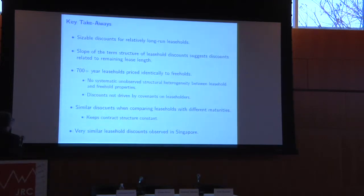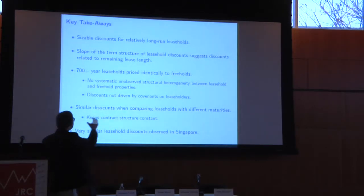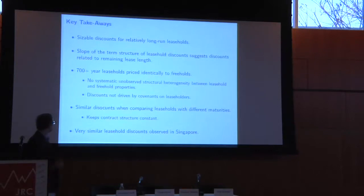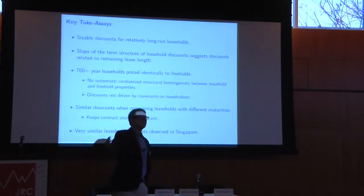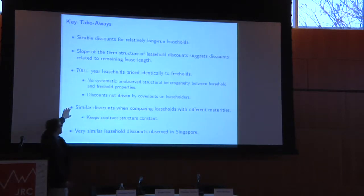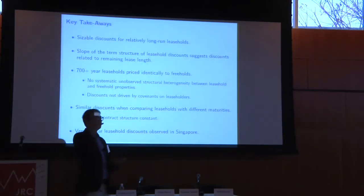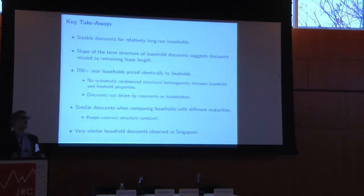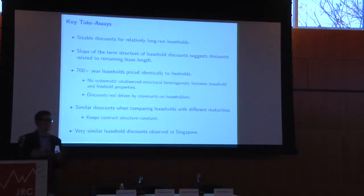The slope of the term structure suggests discounts are related to remaining lease length. The fact that 700-year-plus leaseholds are priced identically to freeholds also makes it less likely these discounts are driven by covenants that freeholders might impose on leaseholders. We find similar discounts when comparing leaseholds with different maturities, keeping the contract structure constant. The results are almost identical. And as I'll note briefly, we have the same data and analysis for Singapore, finding very similar discounts in an otherwise very different housing market structure.